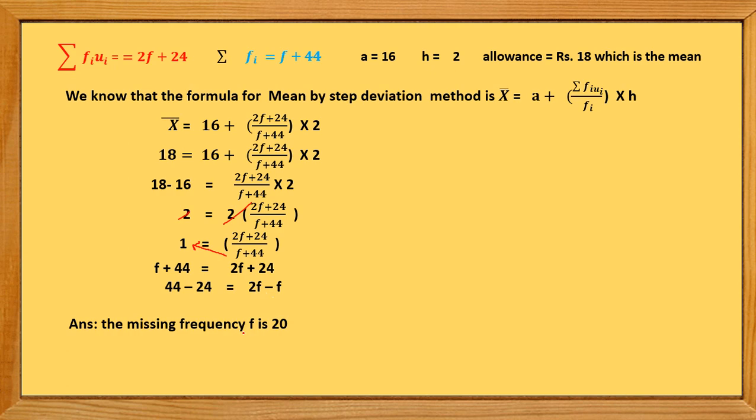By the Step Deviation Method, the formula is x̄ = a + (Σfiui / Σfi) × h. I hope you will be able to solve problems for finding the mean using the Step Deviation Method.